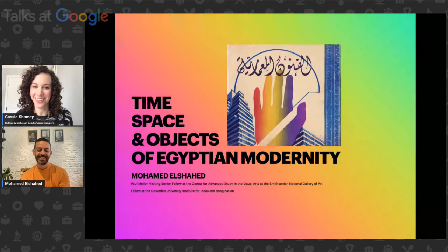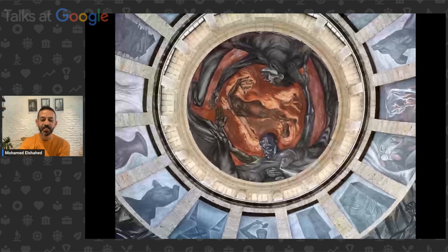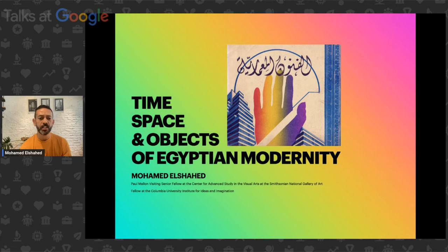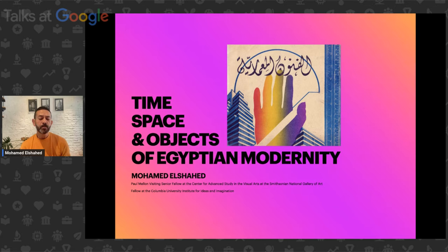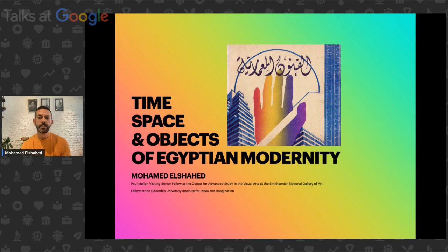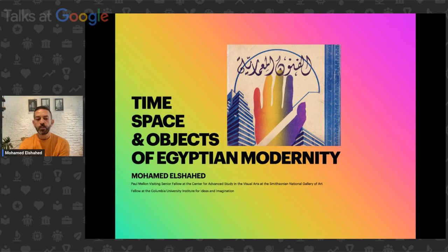Thank you very much. I'm very happy to be speaking with you through Google Talks and to have access to this platform. I hope I don't disappoint speaking about Egyptian modernity and some of my work in the next 35 minutes or so. Let me re-stress the title I chose for today, because these really are the keywords through which I will speak about some of my projects and the concerns and questions that have kept me busy for the last decade and a half, working on the question of modernism in the Arab region, specifically Egypt, and then that taking me into wider questions of modernism and modernity in the global south.